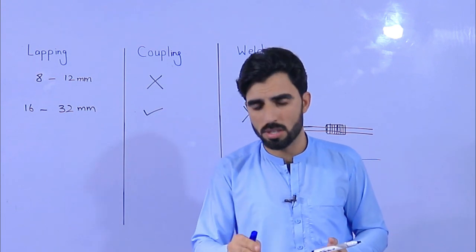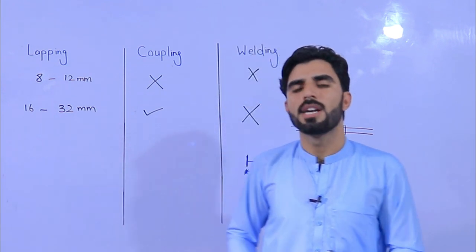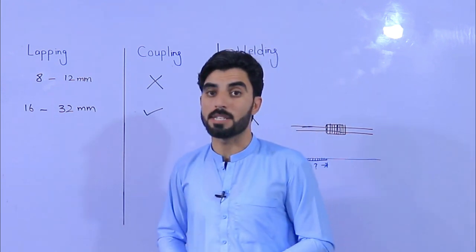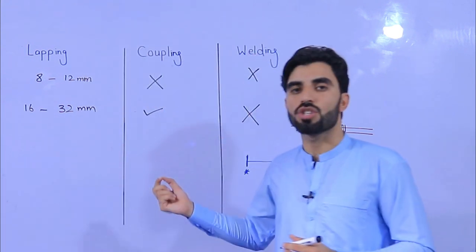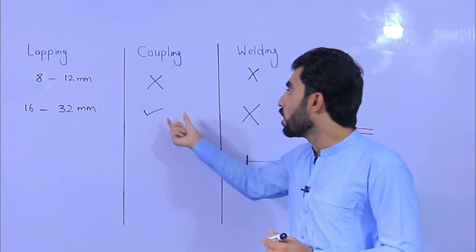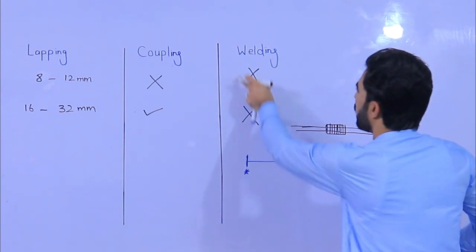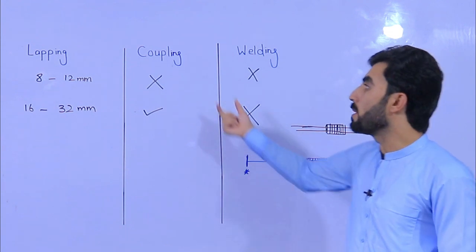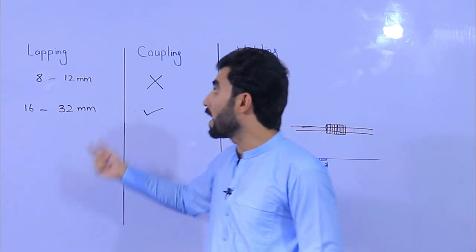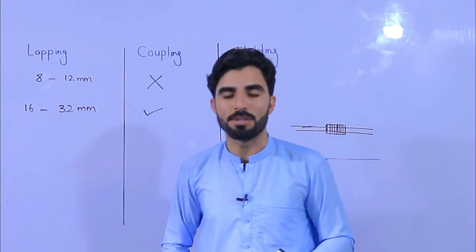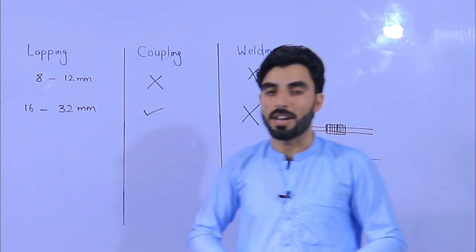For diameters up to 12mm, lapping length is best because it does not become over-cost for the steel reinforcement. But for 16mm and above, coupling is best because using a lap wastes steel and the project becomes over-cost. Therefore, welding is not best, coupling is advanced technology. Use the coupling method if the diameter is more than 16mm, and use overlapping for diameters up to 12mm. If you have a diameter more than 12mm, I recommend coupling or the coupler method.